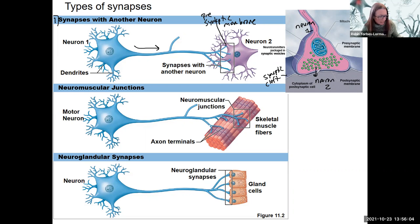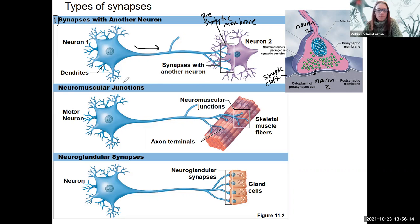Neurotransmitters don't actually go all the way in — they're going to go into the synaptic cleft and bind to a receptor. It's going to be really important because that's where neurotransmitters will be released to transmit the signal to the next cell. So that's one type of synapse.